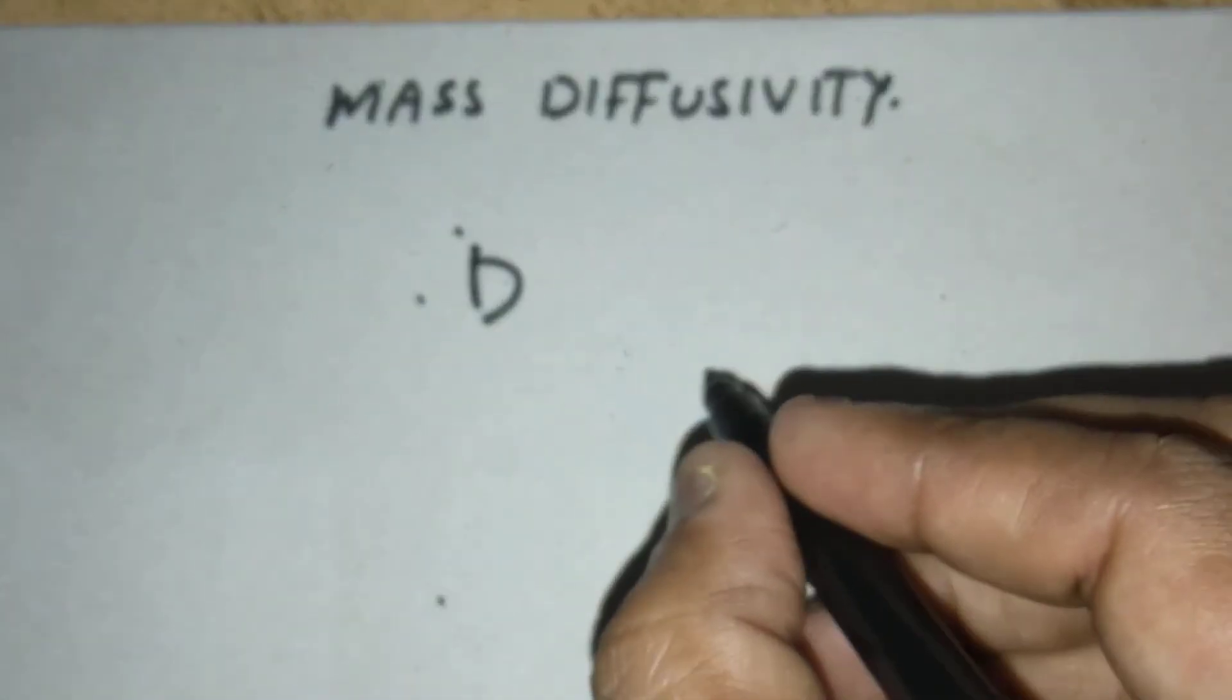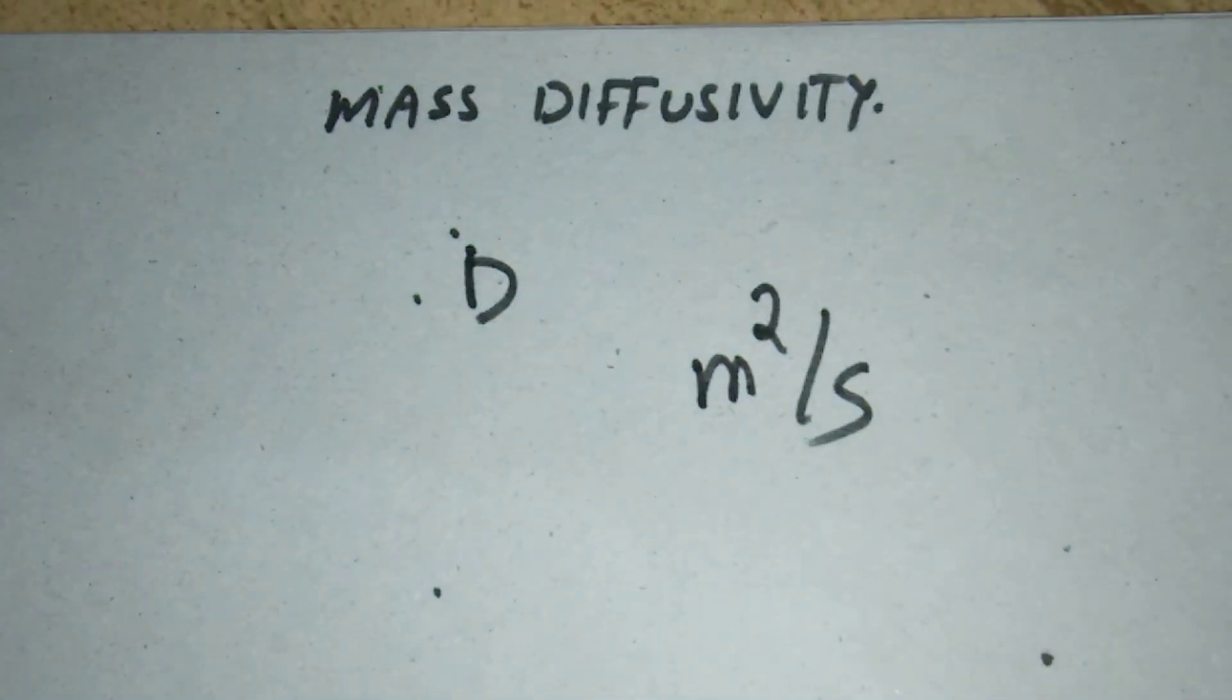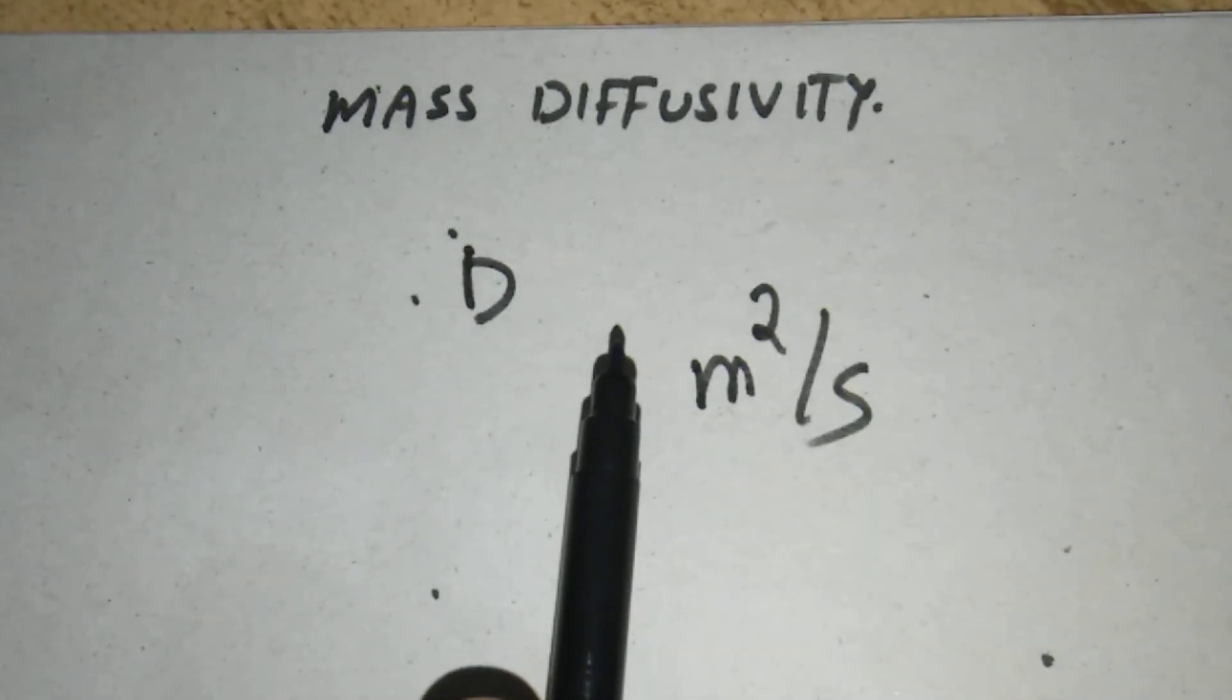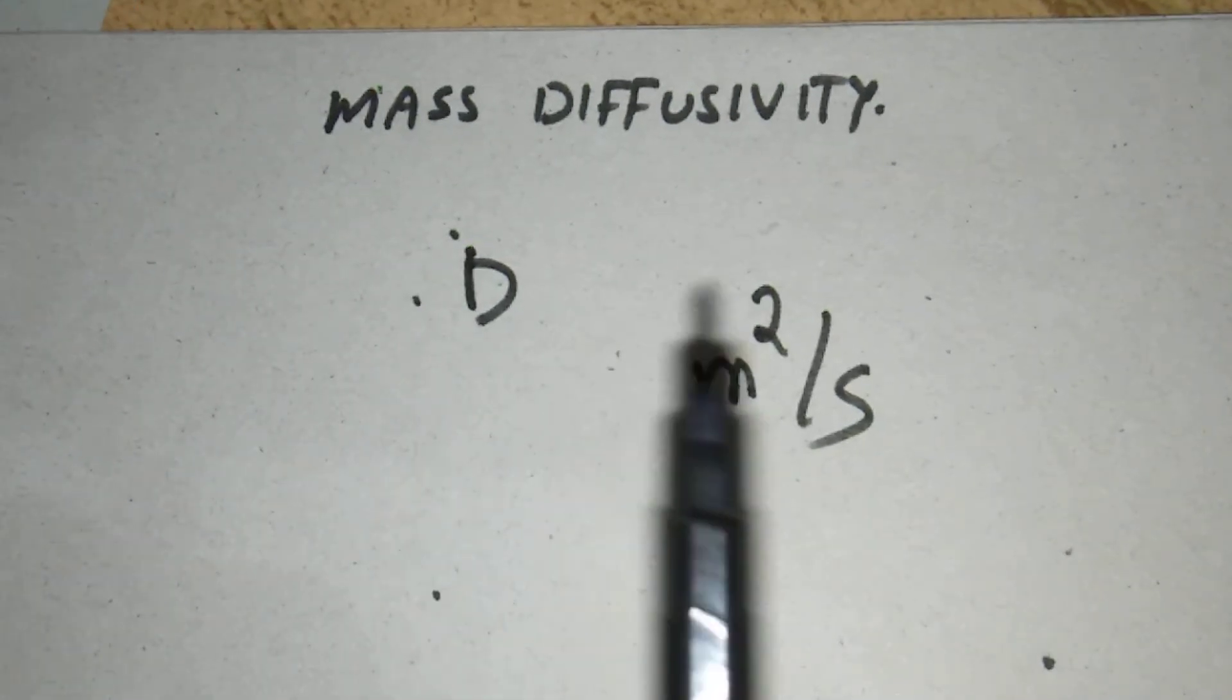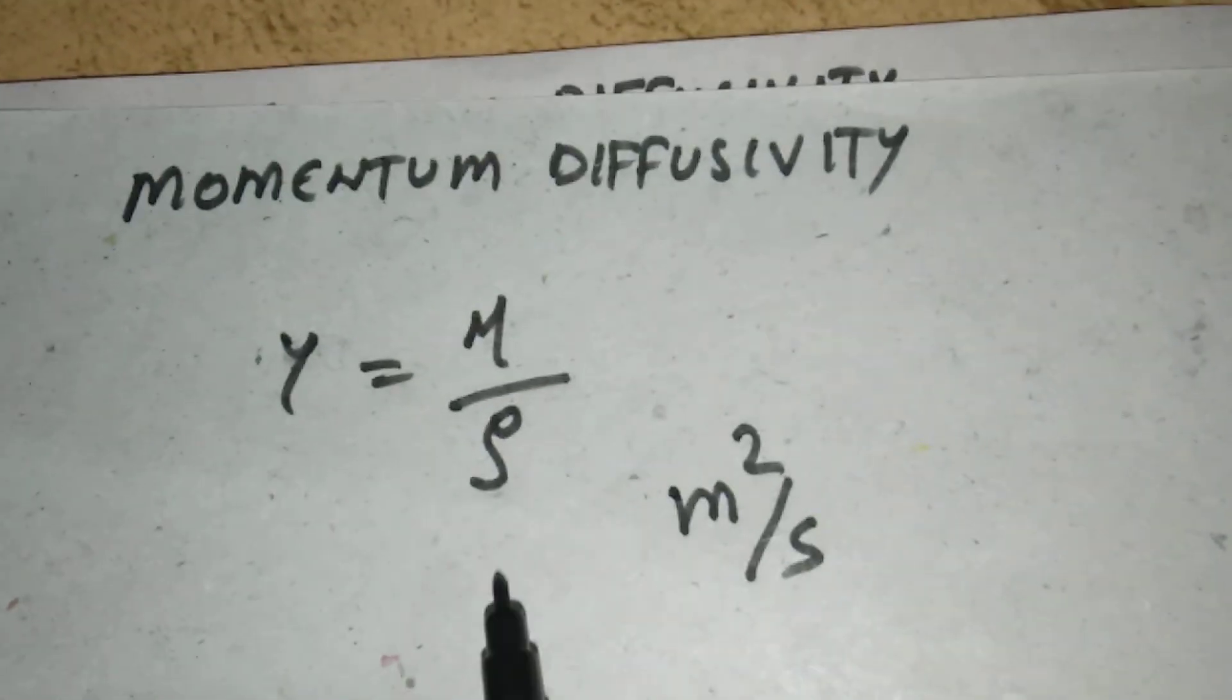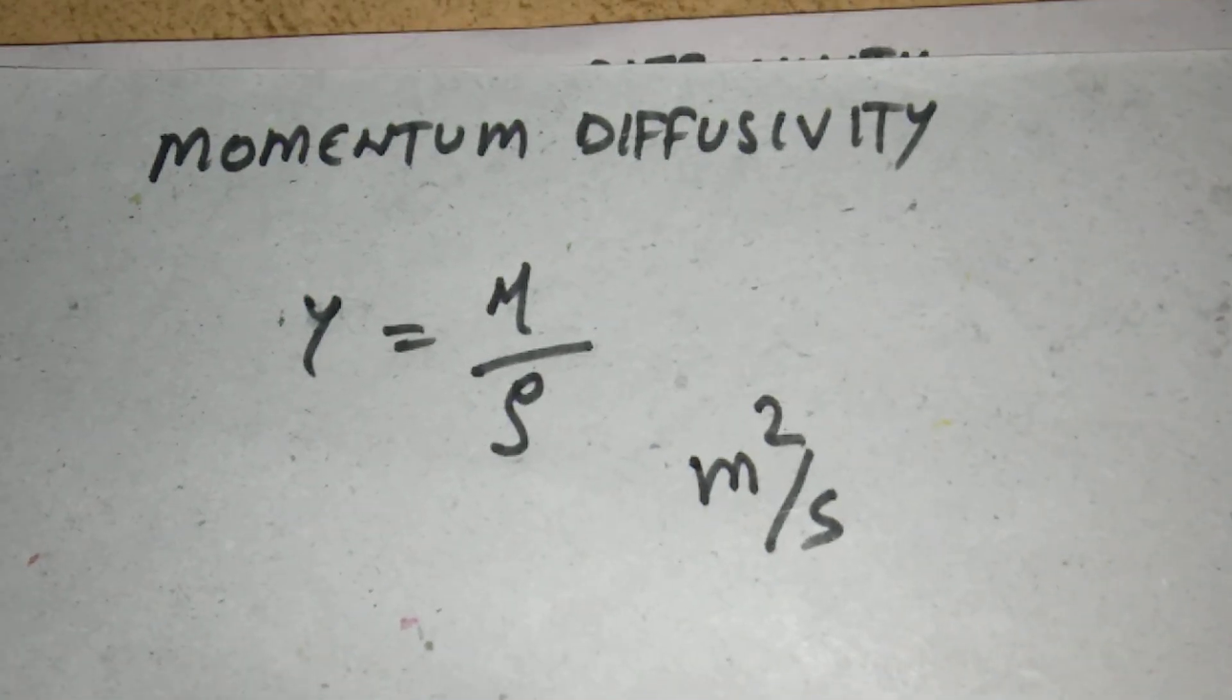Its unit is also meter square per second. This term is in mass transfer. Thermal diffusivity is in heat transfer, and momentum diffusivity is in momentum transfer. Okay, thank you.